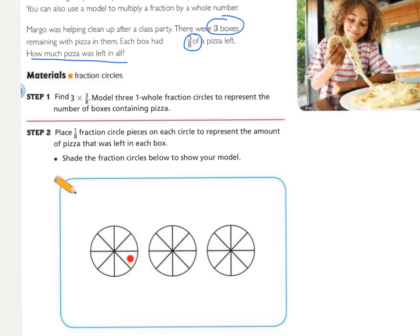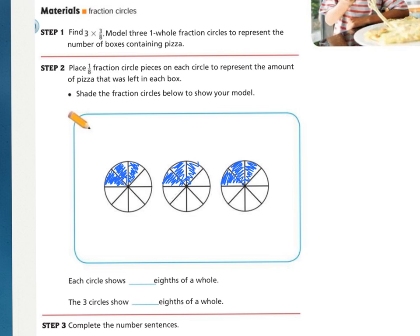We need to shade in how much for each pizza. Well first, there's 1, 2, 3, 4, 5, 6, 7, 8. We know that each of these circles has 8 even pieces, and so there were 3 eighths of each left. So, 1, 2, 3. Do that for the following 2. After you've shaded those in, each circle shows 3 eighths of a hole, because I shaded in 3 for each. And the 3 circles all together, how many pieces are shaded? There are 9 eighths of the hole actually shaded.